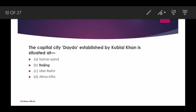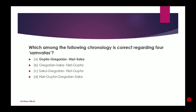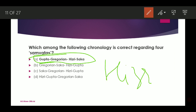The capital city Dadu established by Kublai Khan is situated in Beijing. Next question: Which chronological order is correct regarding the four Samvatas? The correct chronology is: Gupta, then Gregorian, then Hijri, then Shaka. In Hindu mythology we follow Vikrami Samvat, in Islam we follow Hijri, in English we follow the Gregorian calendar, and Shaka is another calendar among many.